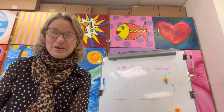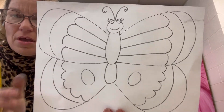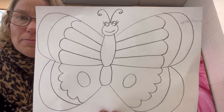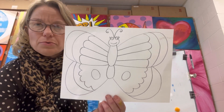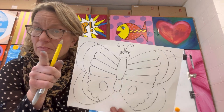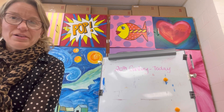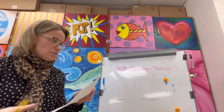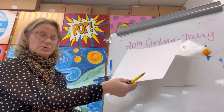Hi friends, today we are going to draw a butterfly. A butterfly is a very special insect that emerges from a cocoon, and the cocoon originally is — any thoughts? A caterpillar! Very good. So a caterpillar spins itself into a special chrysalis or cocoon.